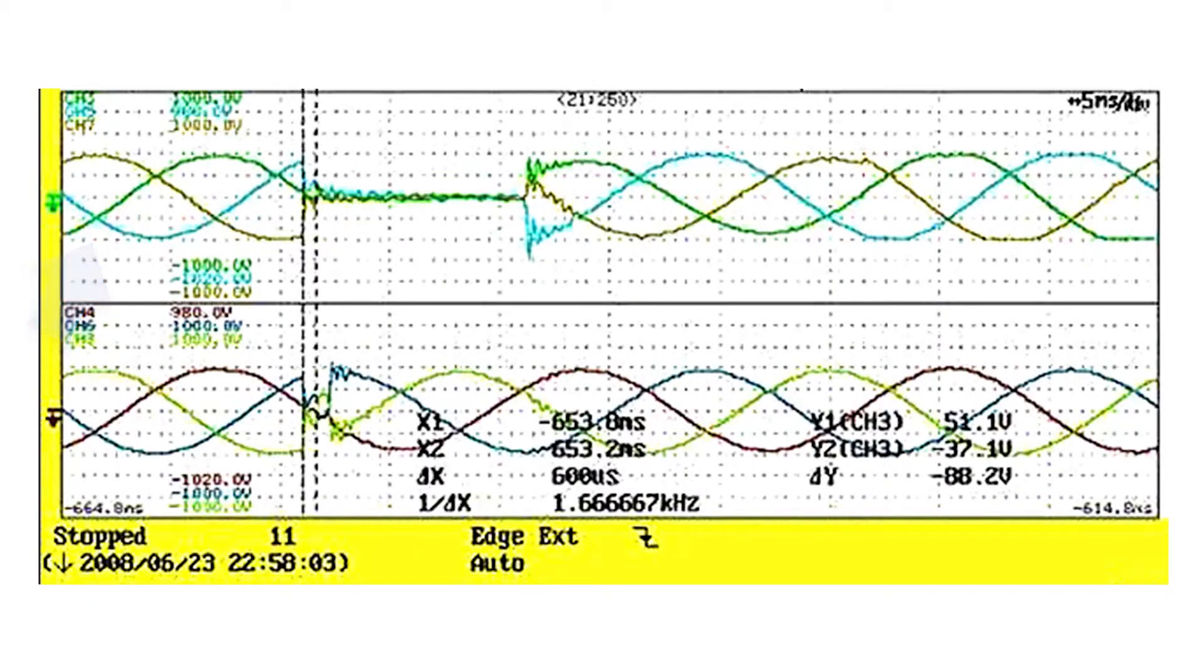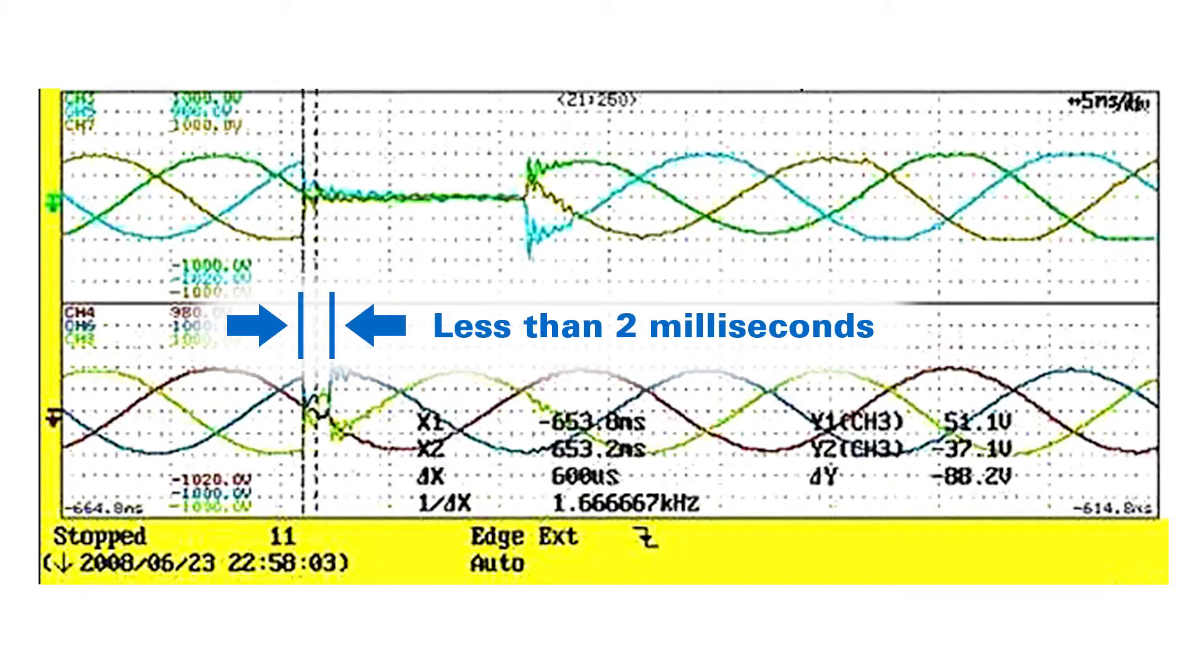Here we see the input power disrupted coming into the UPS and the output power here. At the same point, we do not go to zero volts but continue to produce a three-phase output. And the transition time from utility power to inverter power is in fact less than two milliseconds.